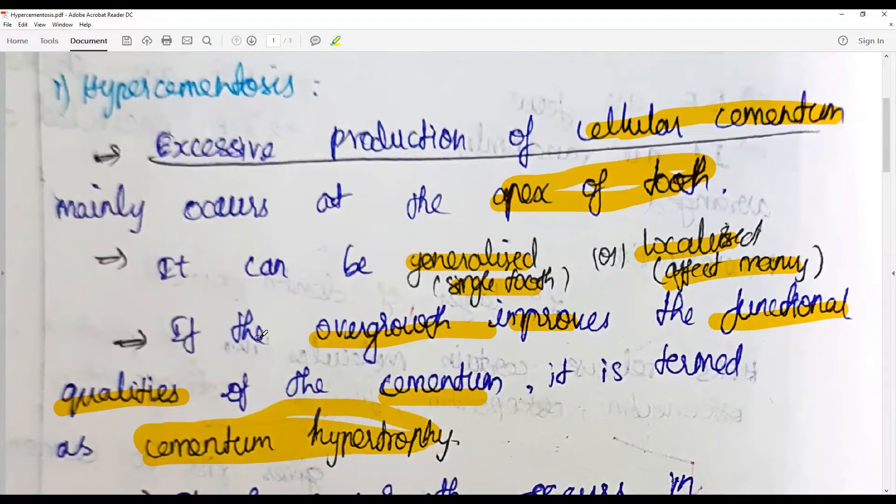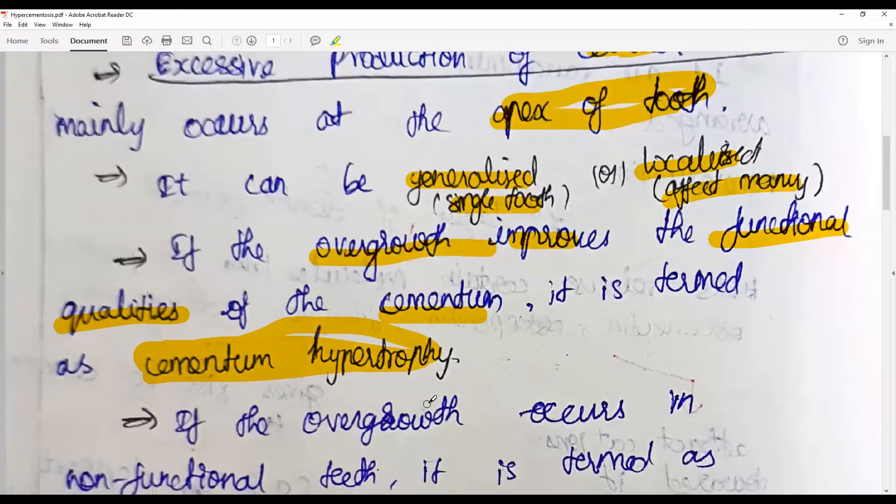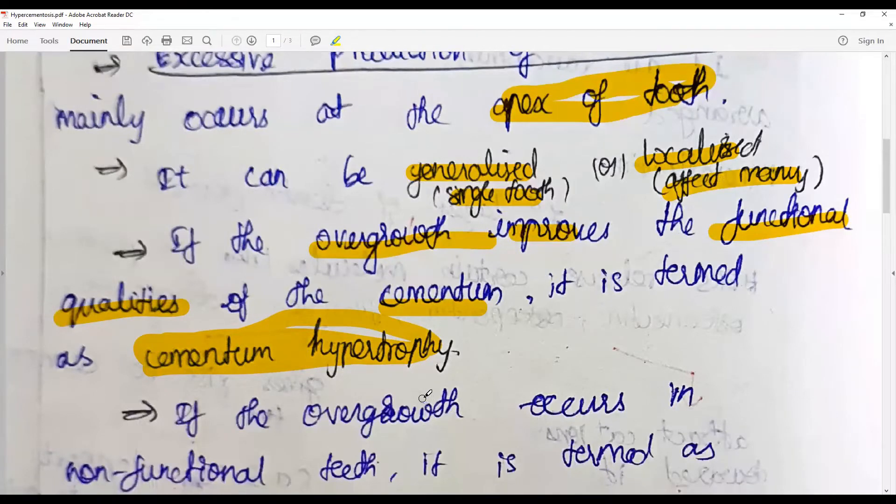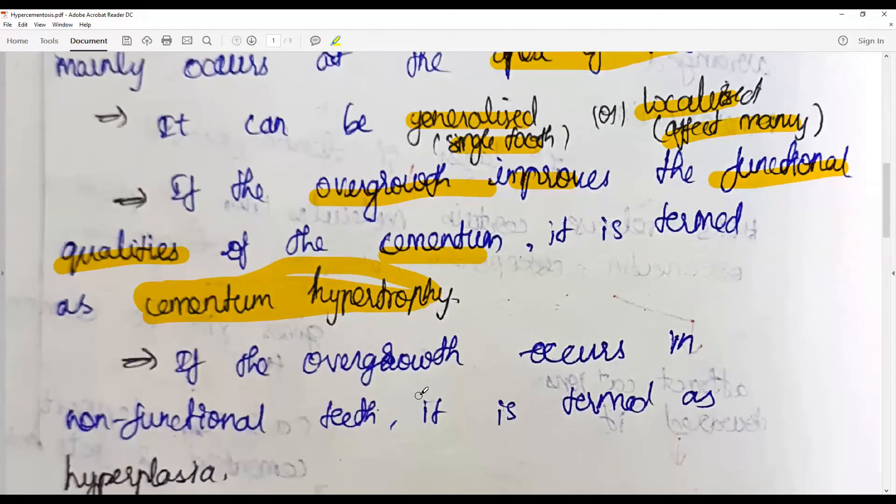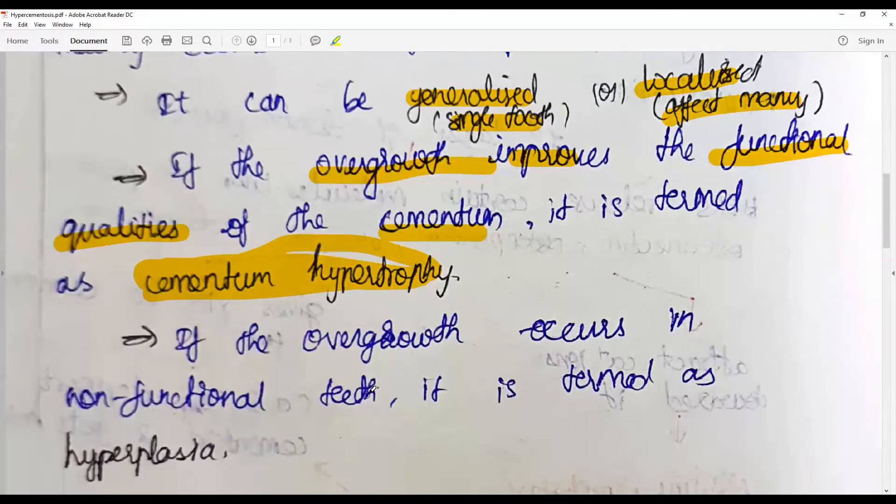If the cementum forms as a result of that and the overgrowth improves the functional qualities or supports mastication, then it is called cementum hypertrophy and is often a supportive measure for this loss of tooth structure. If the overgrowth occurs in non-functional teeth, it is called hyperplasia.